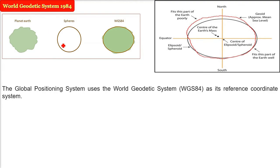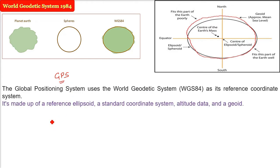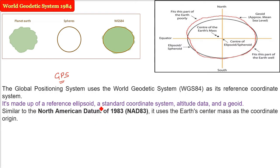The Global Positioning System uses WGS 84 as its reference coordinate system, and we have been using GPS for quite a number of years now. It is made up of a reference ellipsoid, a standard coordinate system, altitude data, and a geoid. Similar to NAD 83 — the North American Datum of 1983 — it uses the earth's center of mass as the coordinate origin.